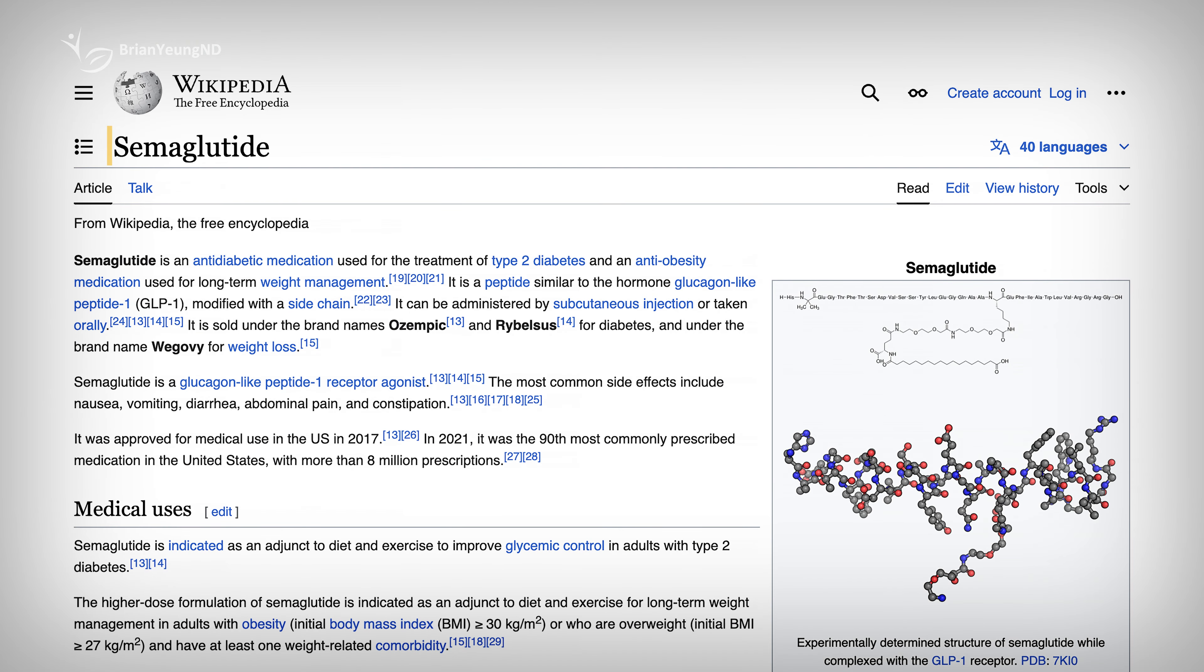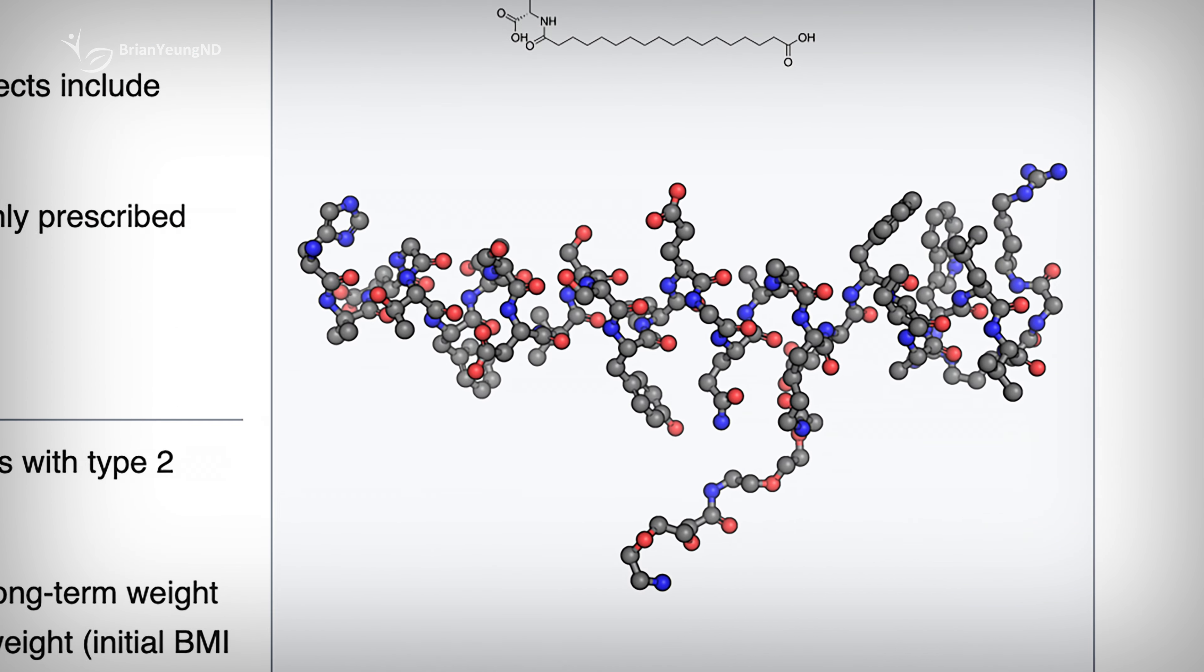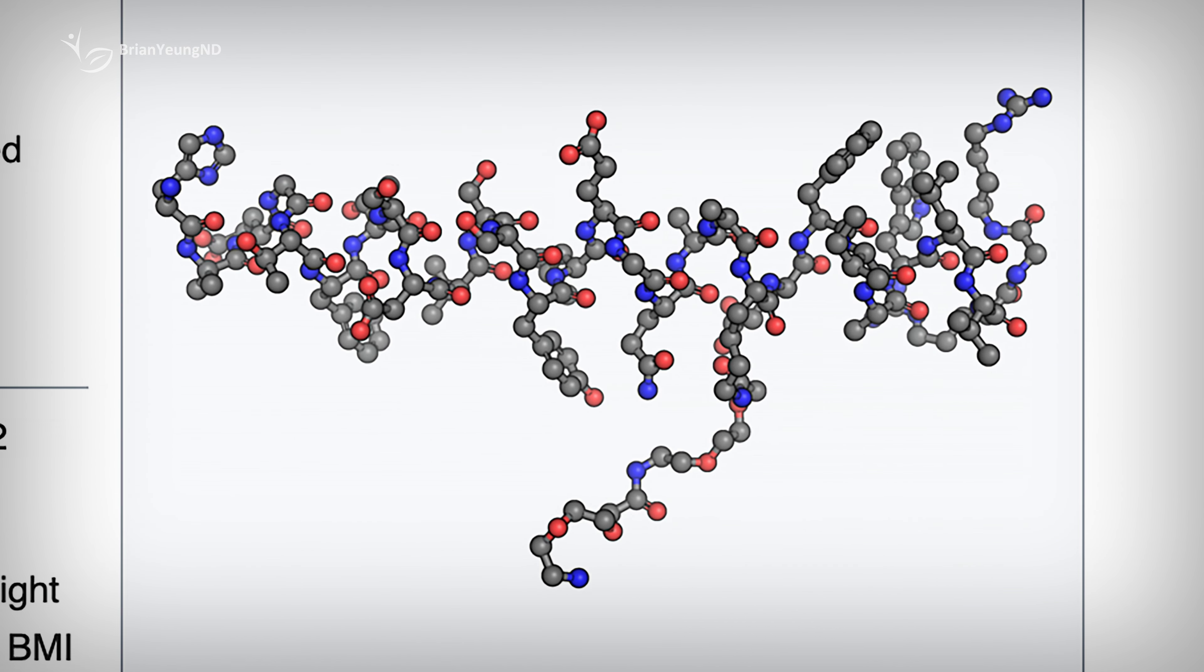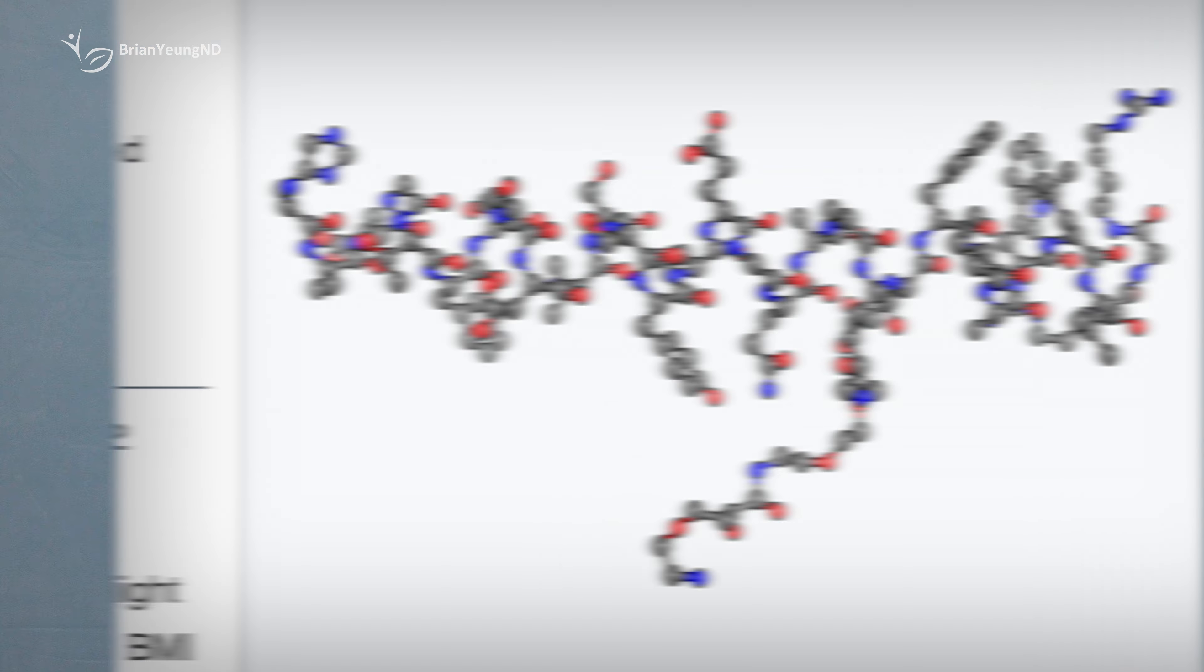Another interesting difference between injected and oral semaglutide stems from the fact that semaglutide is a fragile molecule, easily destroyed by stomach acid. Many of these GLP-1 agonists like semaglutide are vulnerable to the acidic environment and digestive enzymes in the stomach and gut.